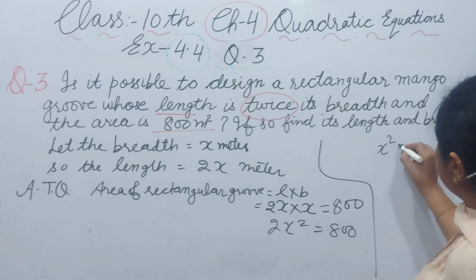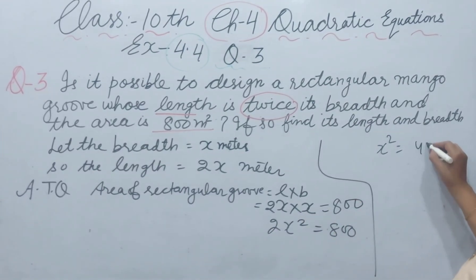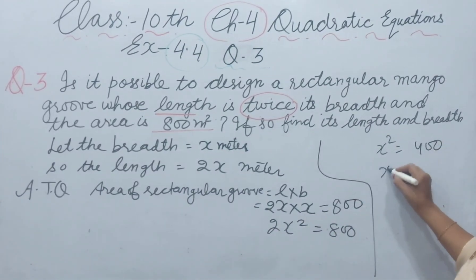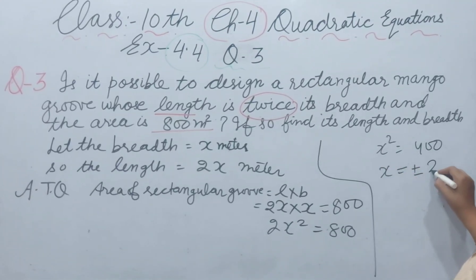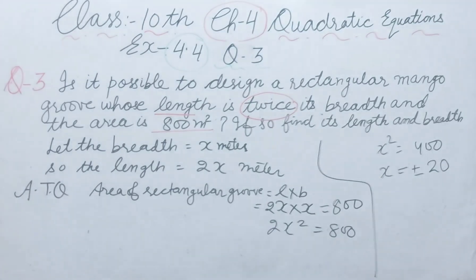x² will be 800 divided by 2, which is 400. x will be the square root of both sides, plus or minus 20.